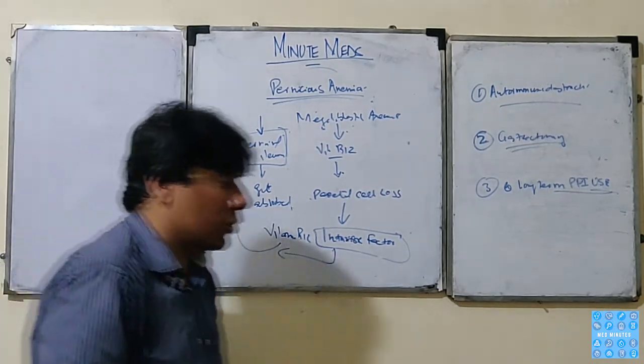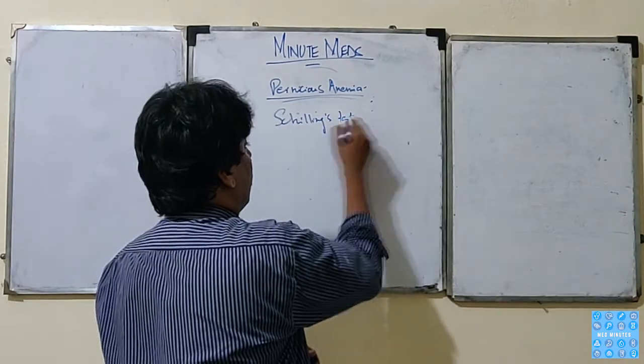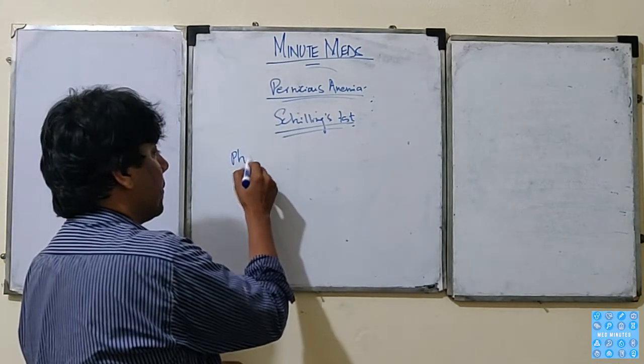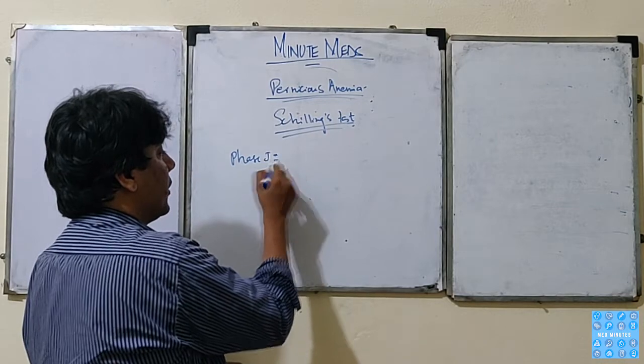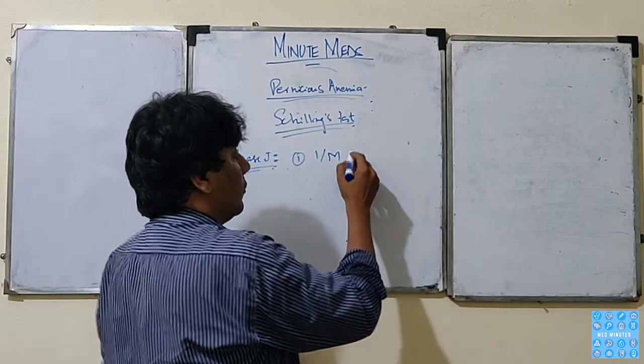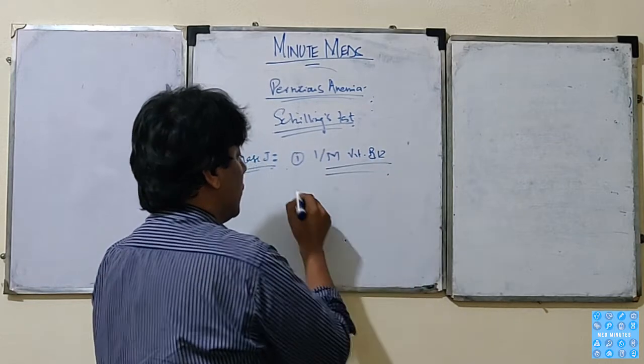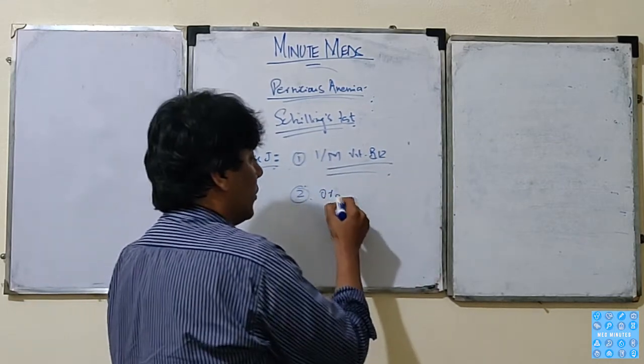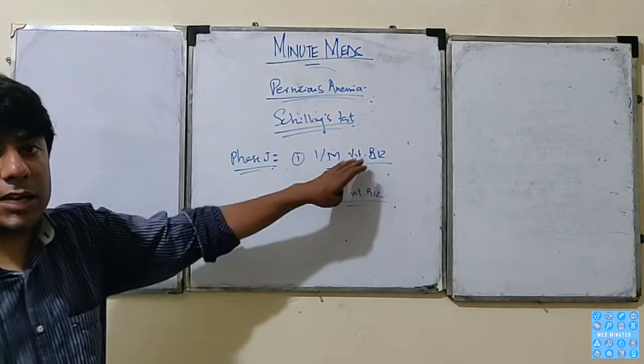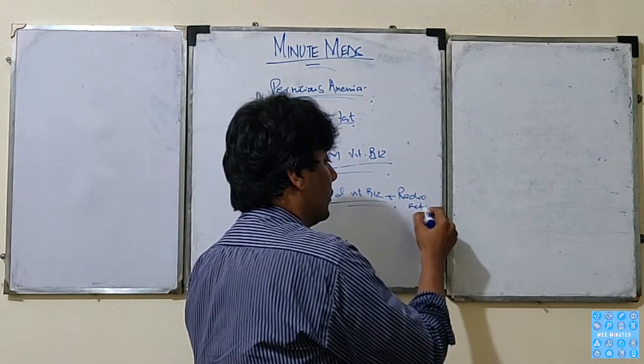To differentiate these three things, we have a test called the Schilling test. What we do is two phases. We give one dose of IM vitamin B12 and oral radioactive vitamin B12.